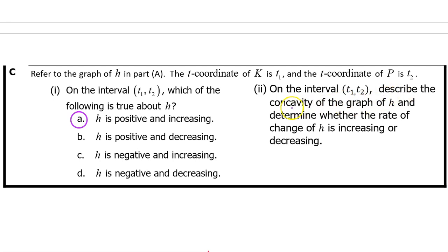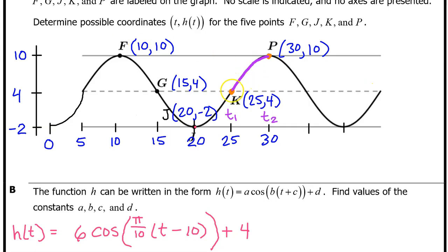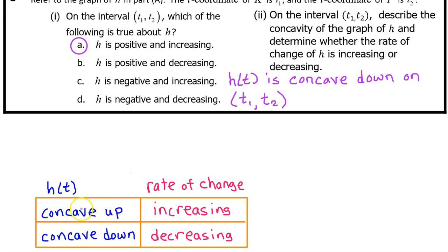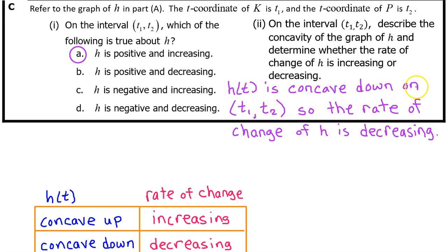First, let's describe the concavity of the graph of h on the interval from t₁ to t₂. At a glance, we can see that h(t) is concave down on the interval from t₁ to t₂. In Unit 1, we learned that wherever h(t) is concave up, the rate of change will be increasing. And wherever h(t) is concave down, the rate of change is decreasing. h(t) is concave down on the interval from t₁ to t₂, so the rate of change of h is decreasing. Always be very specific to get full credit. Make sure you say the rate of change of h is decreasing. Don't just say the rate of change is decreasing.